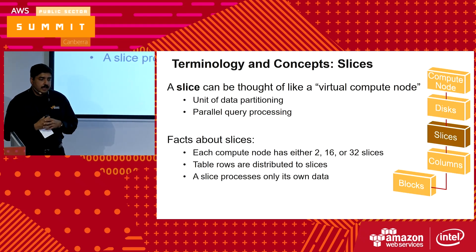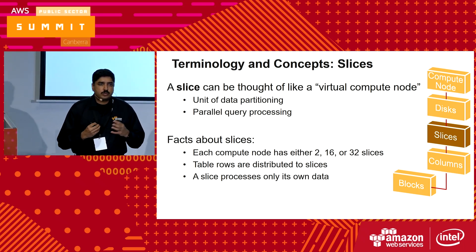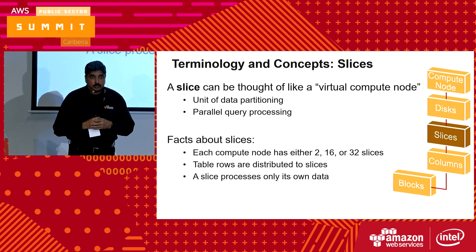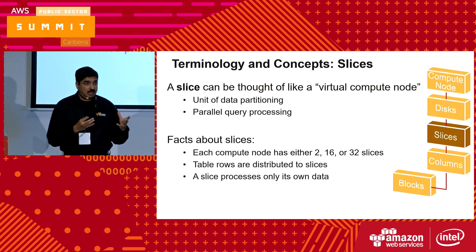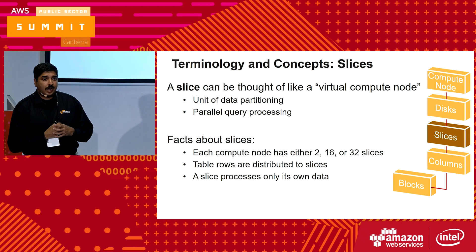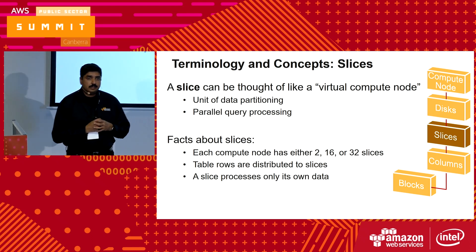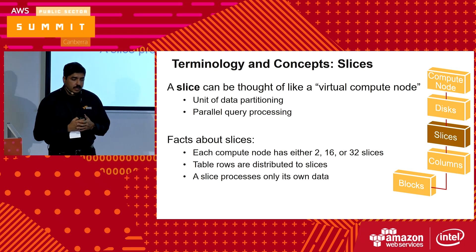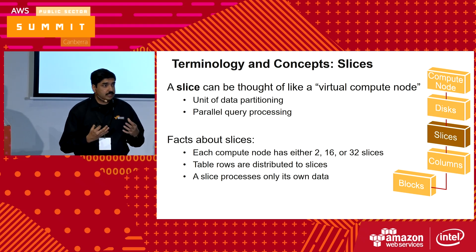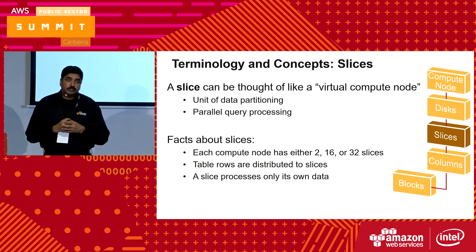A slice is a virtual compute node. Each node has 2, 16, or 32 slices depending on the instance type you choose. So if you have a two-node cluster of a DC1 Large, you will have four slices — two per node. A slice is where your data is stored, and the slice only processes its own data; it doesn't borrow data from another slice to process it.